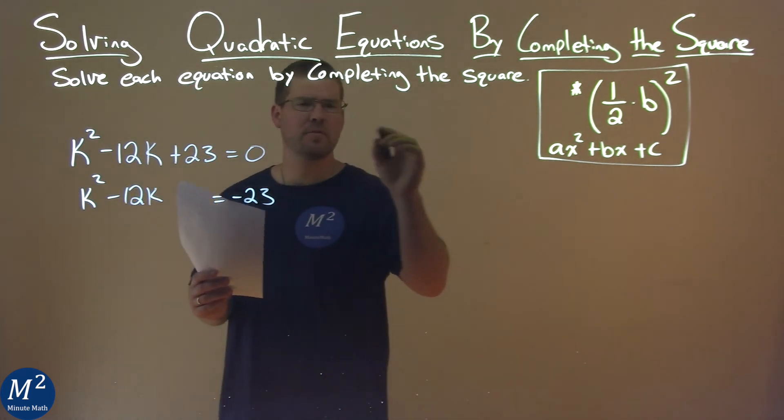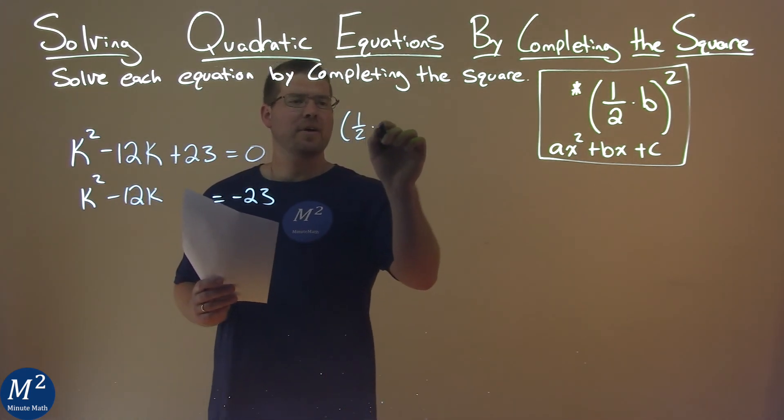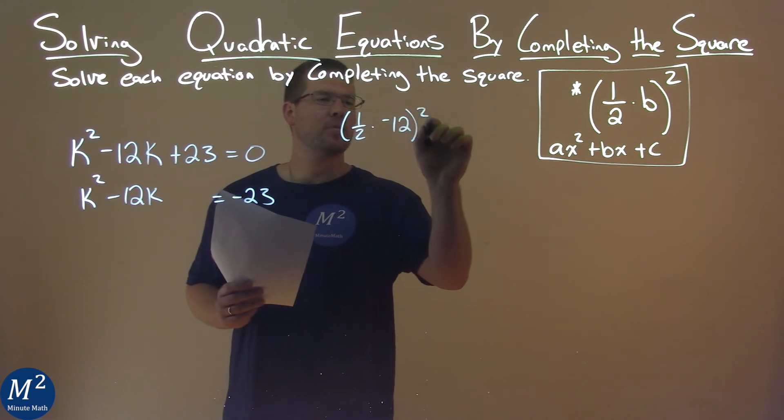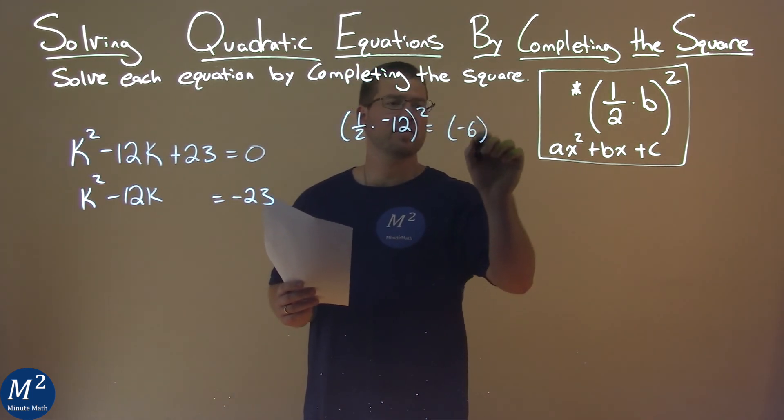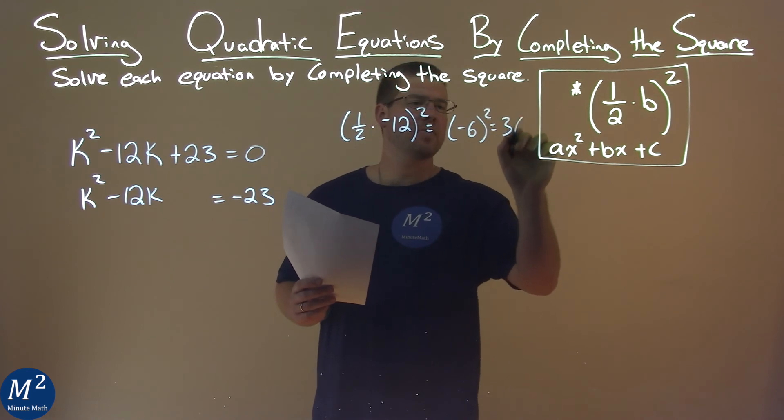Now if b value is negative 12, I'm going to use my formula. 1 half times negative 12, all squared. 1 half times negative 12 is negative 6. We square that and we get a positive 36.